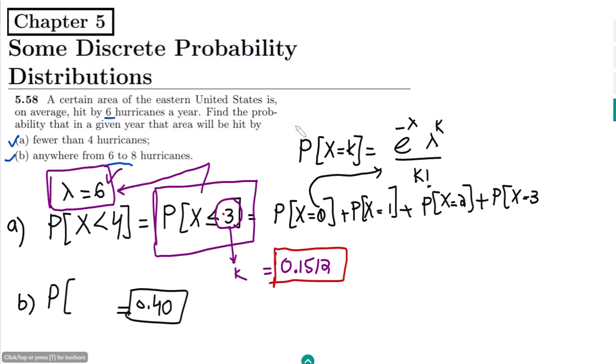That's it for today. We solved question 5.58 and saw how to use the Poisson distribution table to find probabilities. If you have any questions, you can ask in the comment box. See you soon.